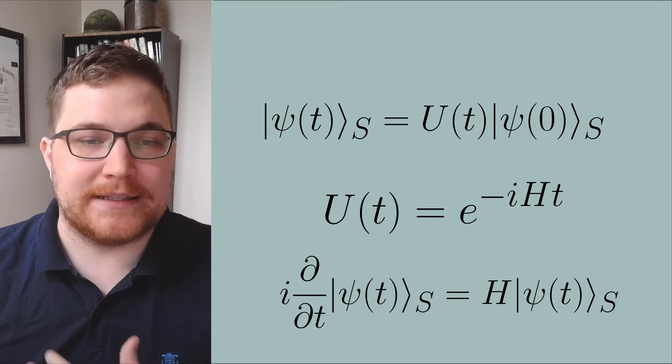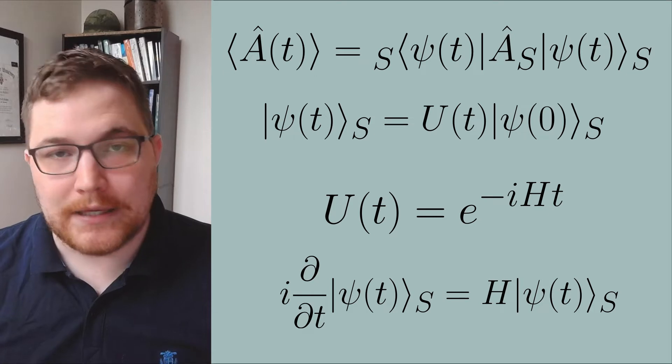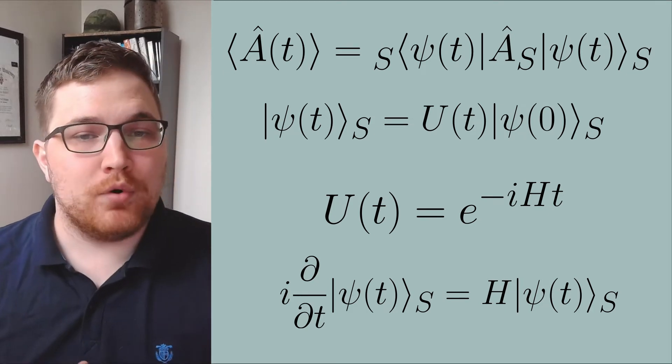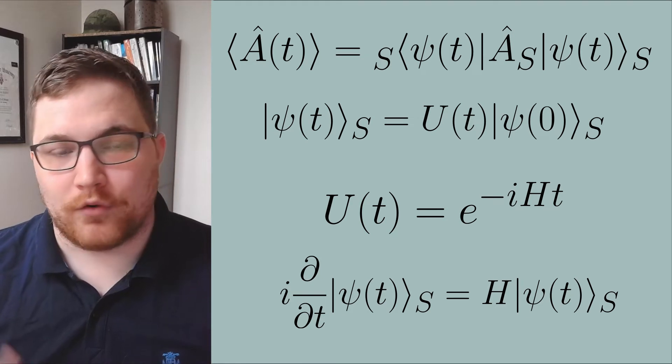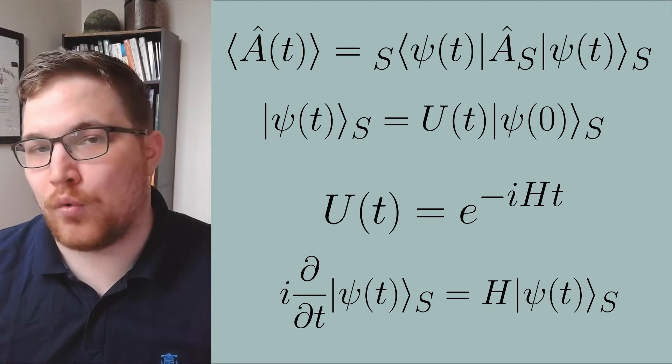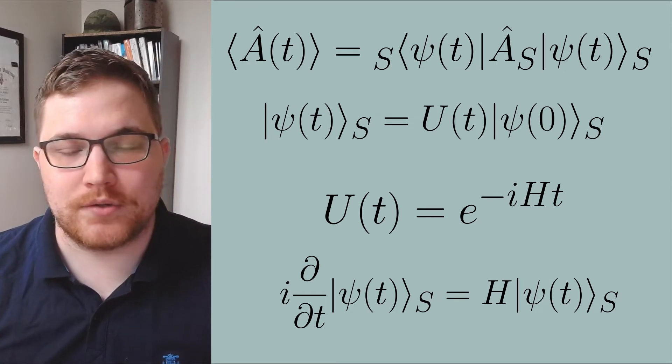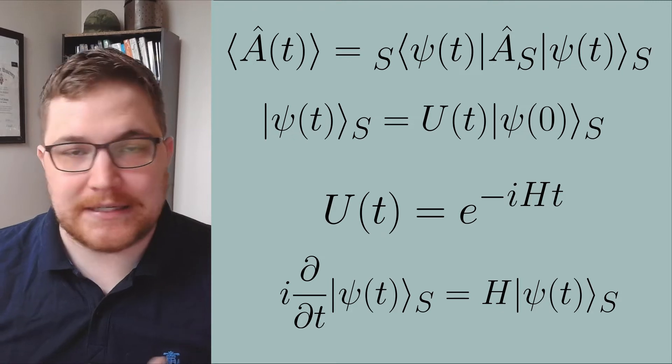From there we can generate time-dependent expectation values by applying the state and its Hermitian conjugate to the observable in the usual way. It's important to note that regardless of the picture chosen, actually physical quantities like expectation values will always end up being the same at the end of the day in every picture.